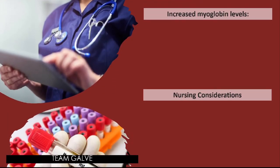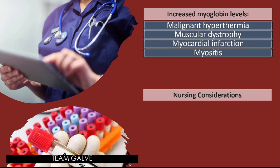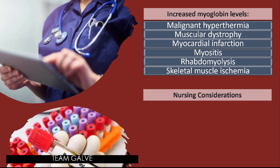Increased myoglobin levels may indicate: malignant hyperthermia, muscular dystrophy, myocardial infarction (MI), myositis, rhabdomyolysis, skeletal muscle ischemia, and skeletal muscle trauma.